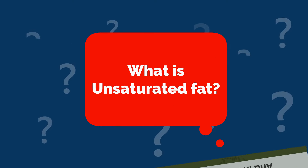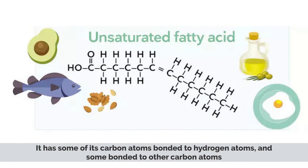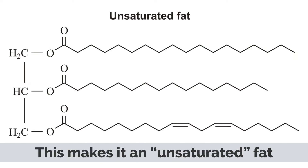What is unsaturated fat? Unsaturated fat, on the other hand, is liquid at room temperature and is often used in cooking. It has some of its carbon atoms bonded to hydrogen atoms and some bonded to other carbon atoms, which makes it an unsaturated fat.